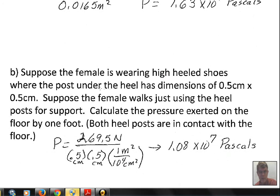The calculation of the area now: 0.5 centimeters for each post. Again, we have to convert the square centimeters to square meters. And now we have 1.08 times 10 to the seventh pascals.